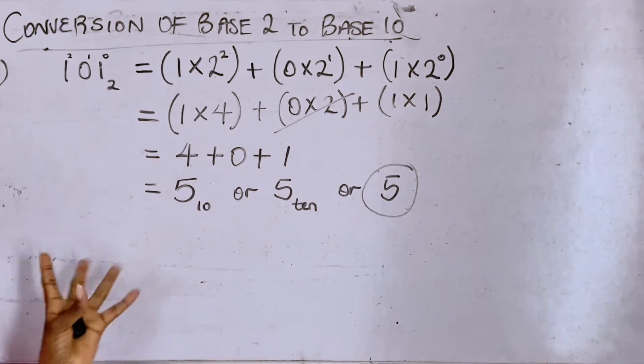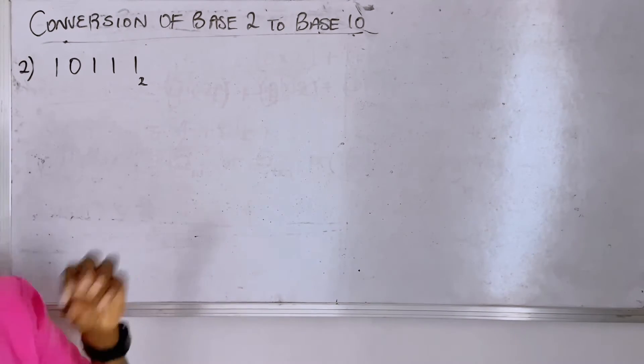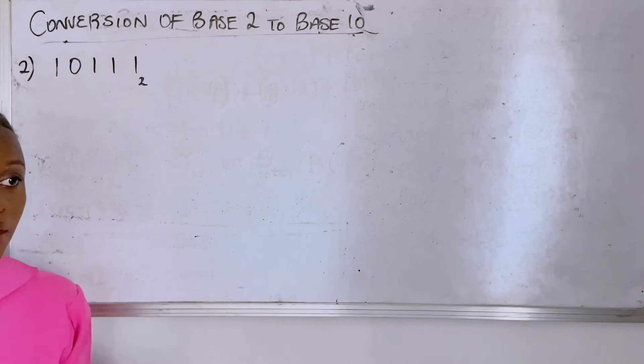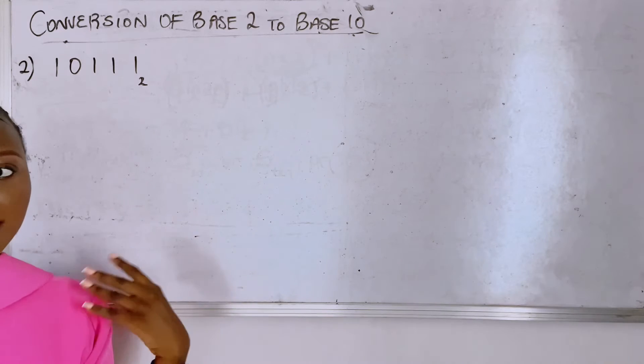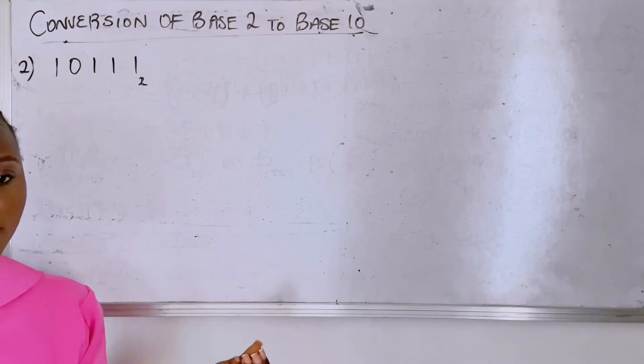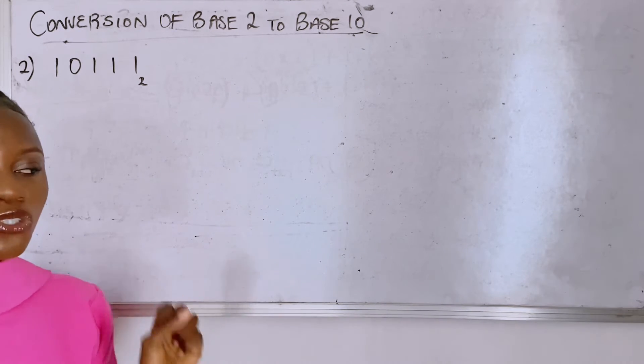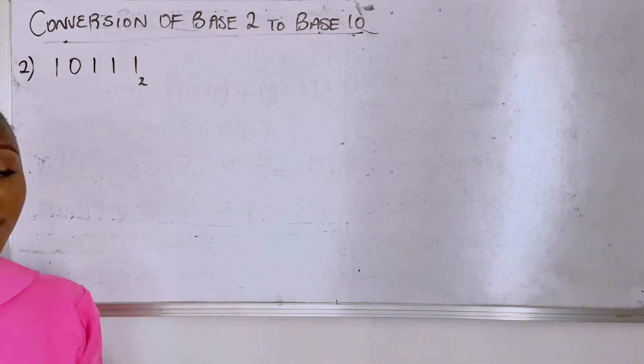Well I hope that made sense, let's solve something else so it could make more sense. We'll go with another example. Now one thing I want you to note in mathematics is once you get the formula or the steps, you're good to go. So I want you to put it at the back of your mind that whenever we're converting from base 2 to base 10, you would always have zeros and ones.